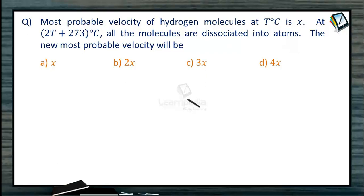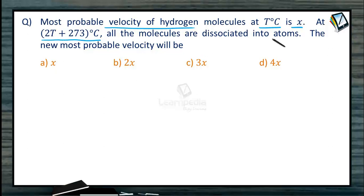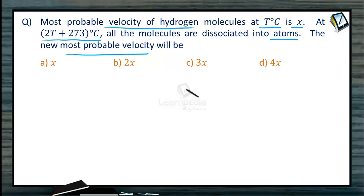This is a numerical related to the most probable velocity of hydrogen molecules, which is given as x at a temperature of t degree centigrade. At a temperature of 2t plus 273 degree centigrade, all the molecules are dissociated into atoms — hydrogen molecules dissociated into hydrogen atoms — and we need to find out the new most probable velocity of the hydrogen atoms.